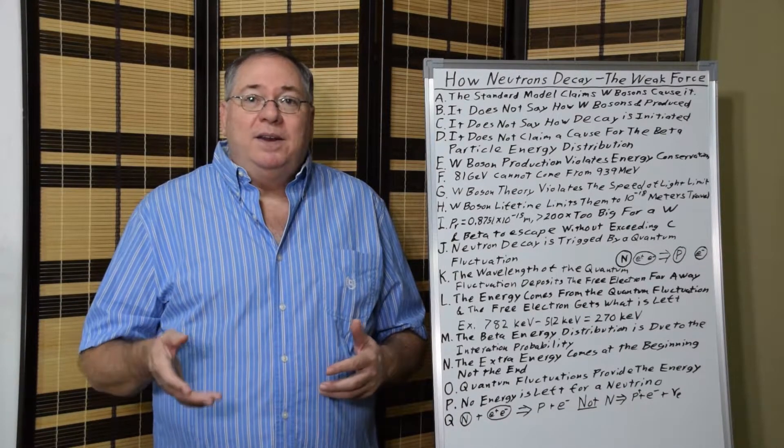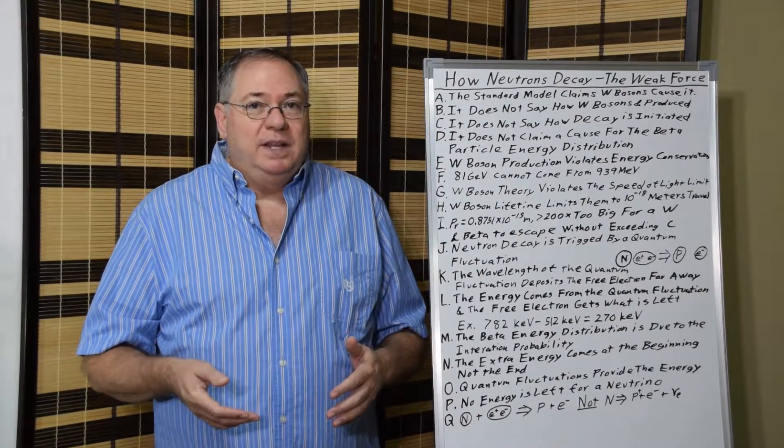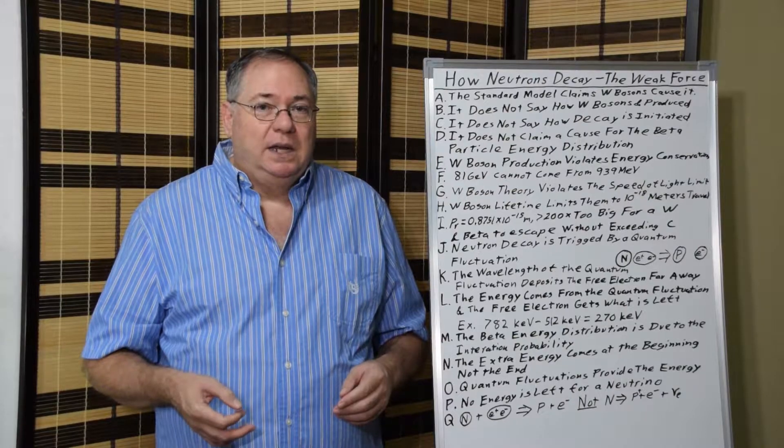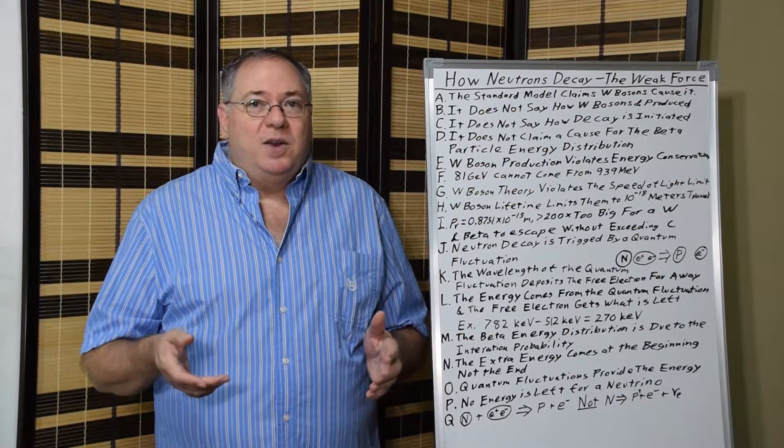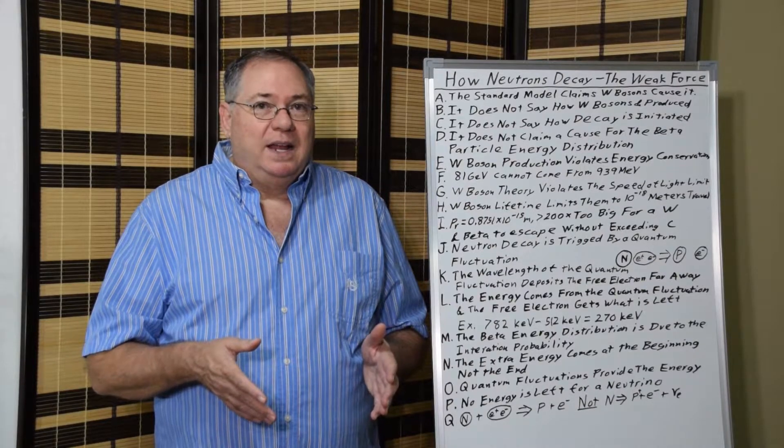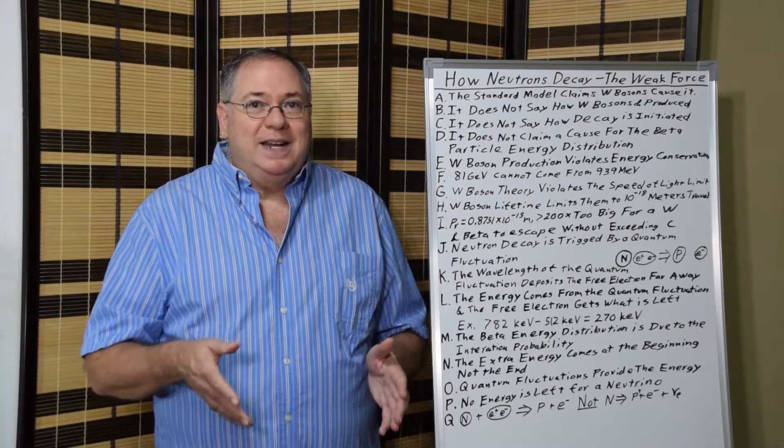The only way around it is if you say, well, the W-boson is so short-lived that it's essentially a quantum fluctuation. But in that case, it can only travel less than, or around 10 to the minus 18 meters.